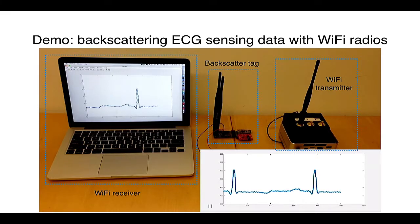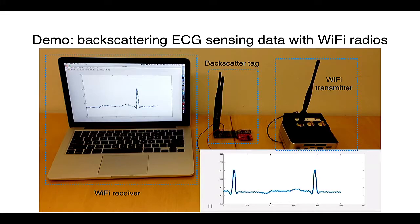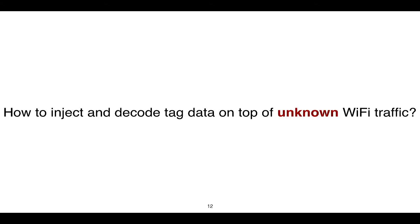So how do we build such a system? Both the transmitter and the Wi-Fi receiver are commercial devices requiring no hardware modification, and the Wi-Fi transmitter can transmit arbitrary Wi-Fi packets. The first challenge we address is how to inject and decode tag information on top of unknown wireless traffic. The wireless radio can be transmitting arbitrary data, but the tag injects its own information on top of such unknown traffic. Let's look at a concrete example of how Wi-Fi works.